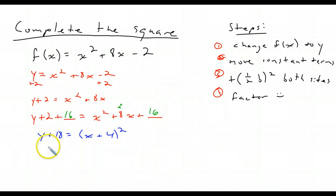And then it's just a matter of moving over the 18. So if I subtract 18 from both sides, so I have y equals x plus 4 squared minus 18. Just don't forget to change this back into your f of x. And that's the only thing that we'd have to do different. So f of x equals all that stuff.